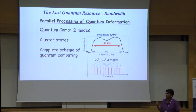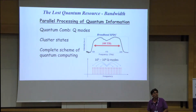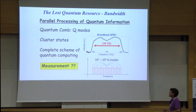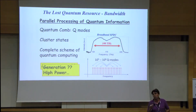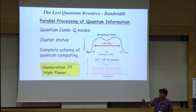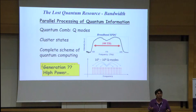We want to do something about measurement — we can generate all of them at once, but can we measure all of them at once? What I'm going to tell you today has to do with generation, specifically with high power generation. When you go below the threshold of an OPO, they all line up. But once you go above threshold, you have mode competition, and many times you just have one or two, and that's it.